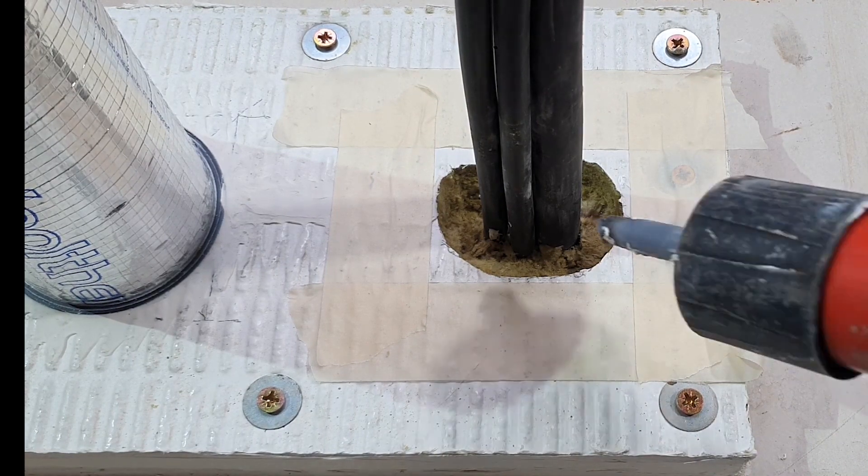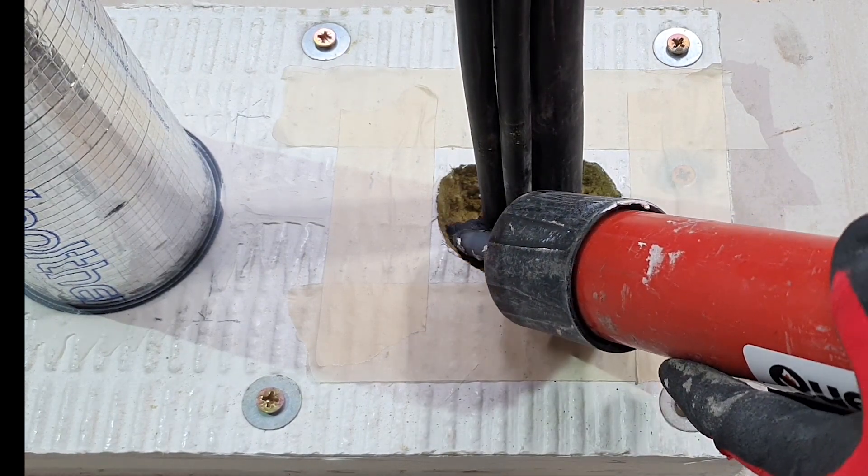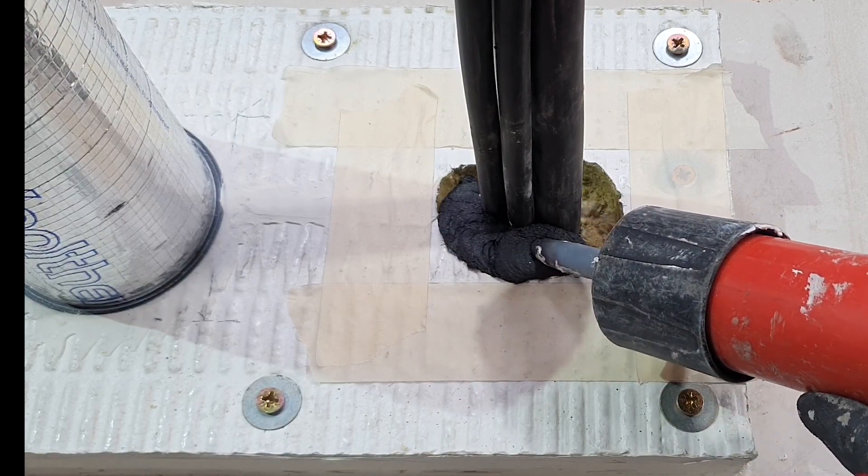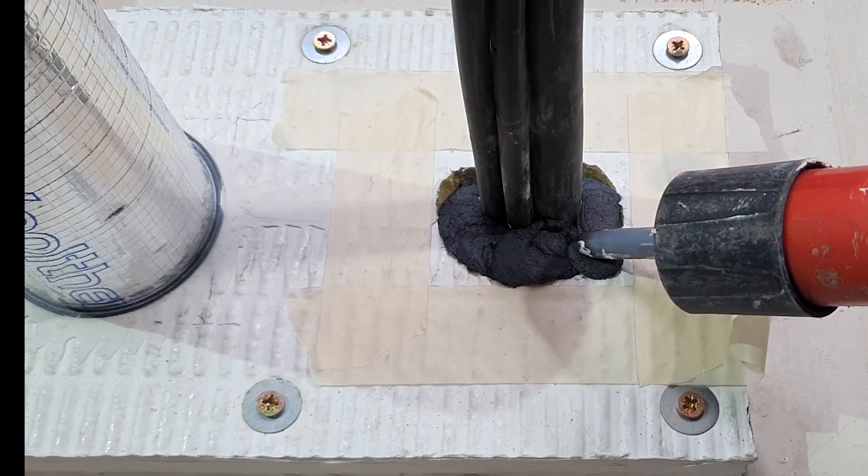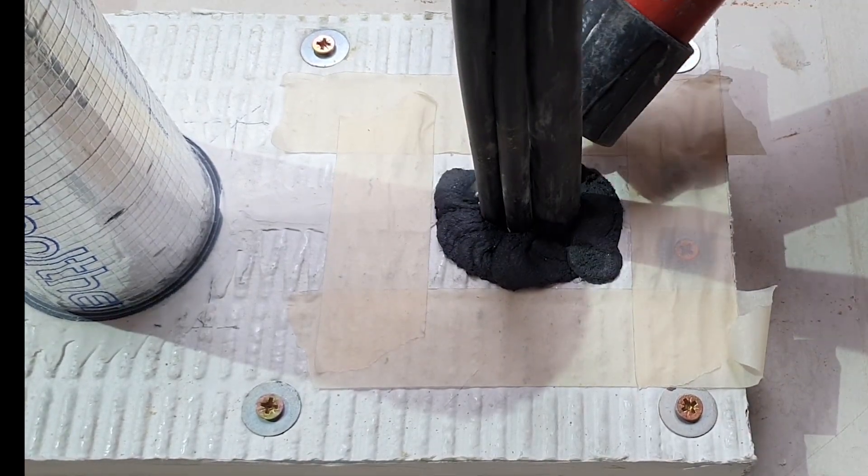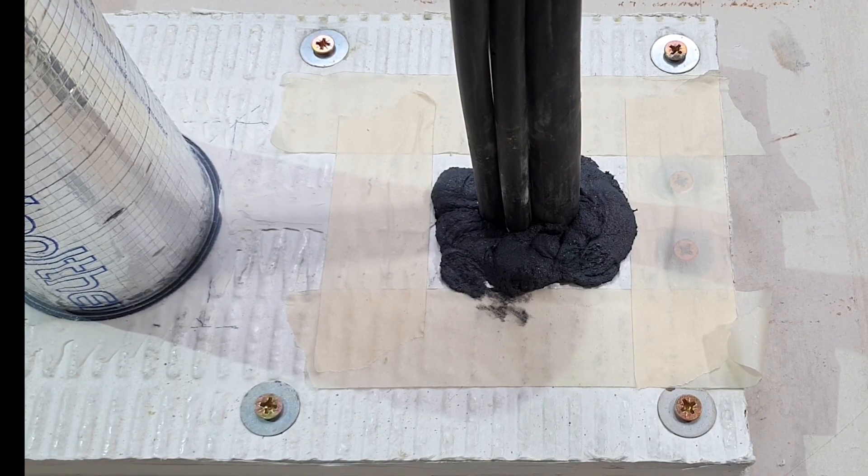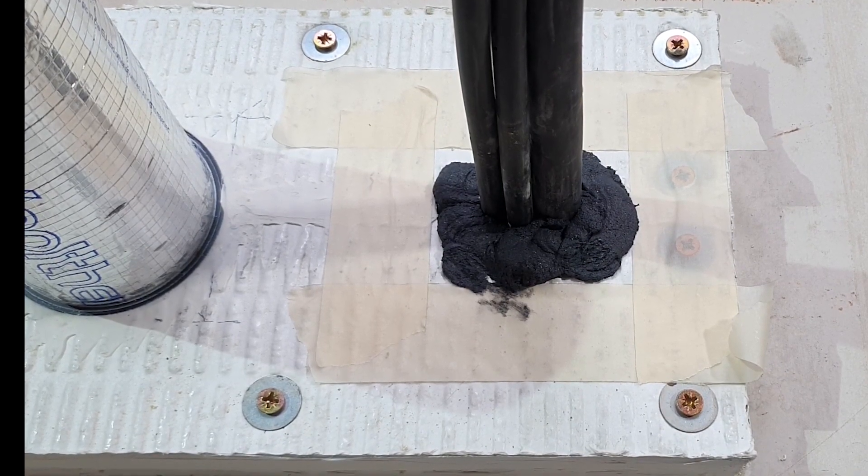The Quellstop HPE sealant comes in 310mm tubes and it is applied using a suitable sealant gun pumped in and around the cables to the full depth of the annulus ensuring all gaps are filled in and around the cables.